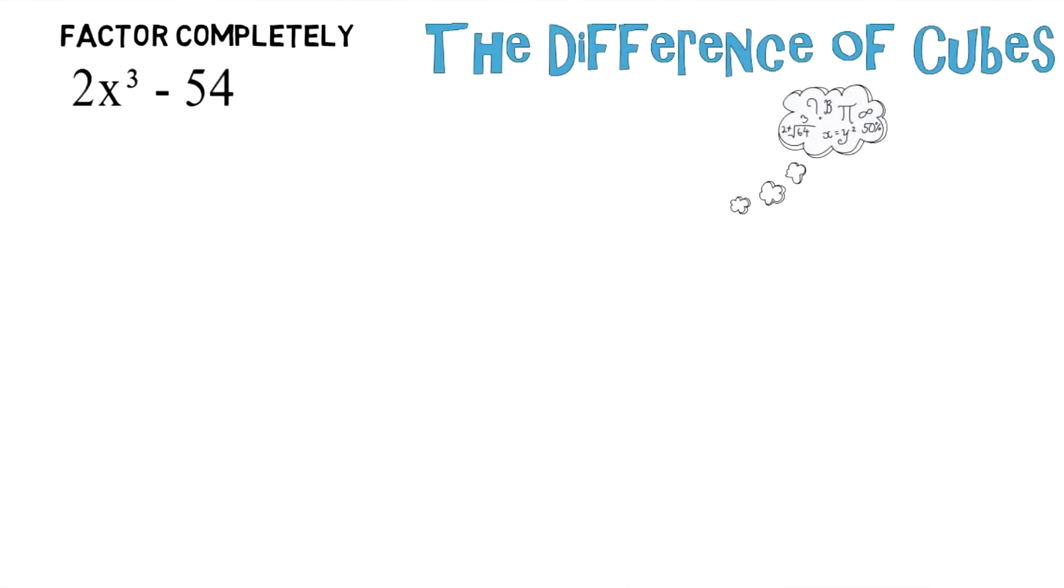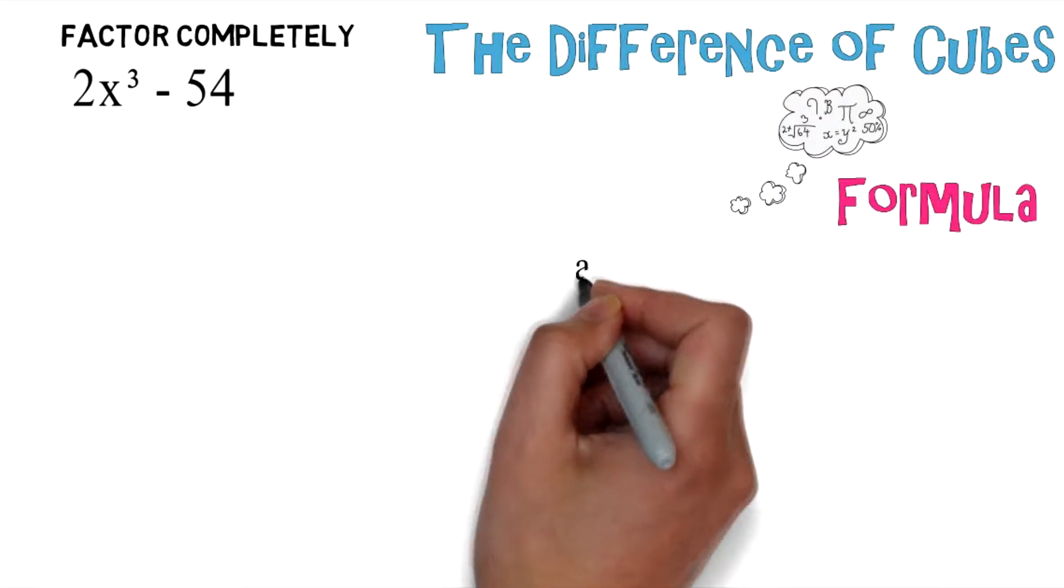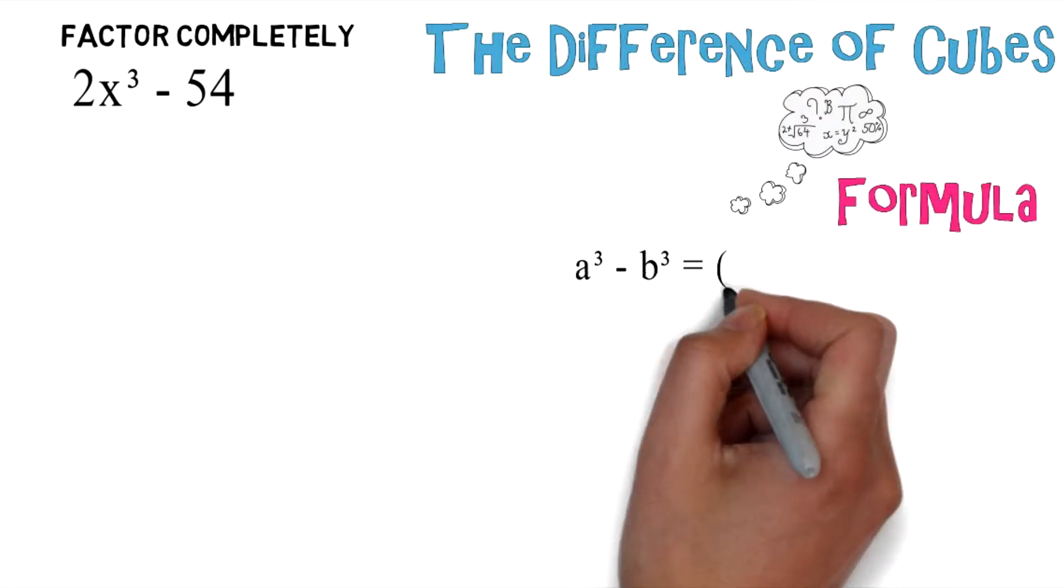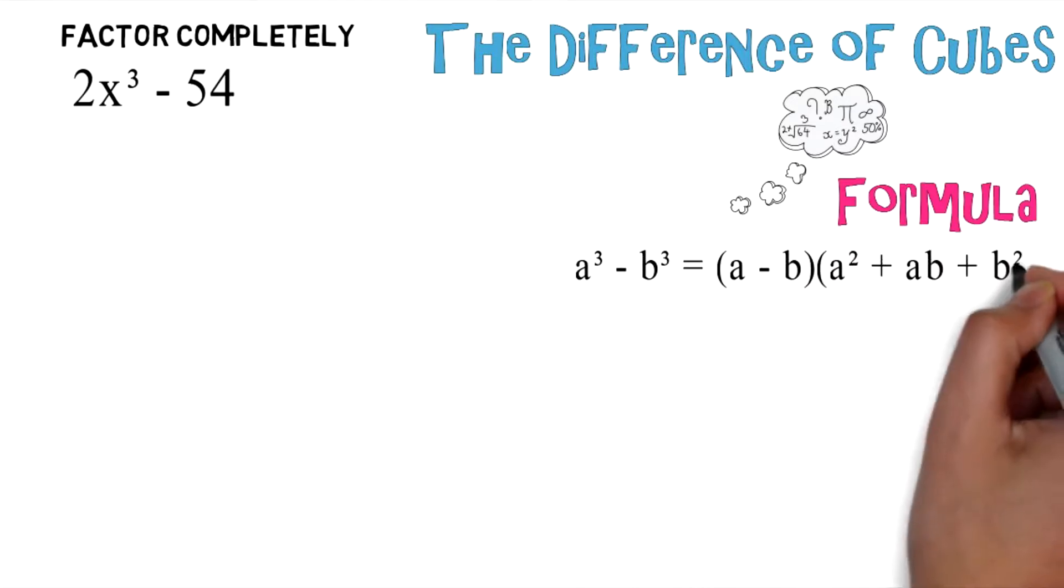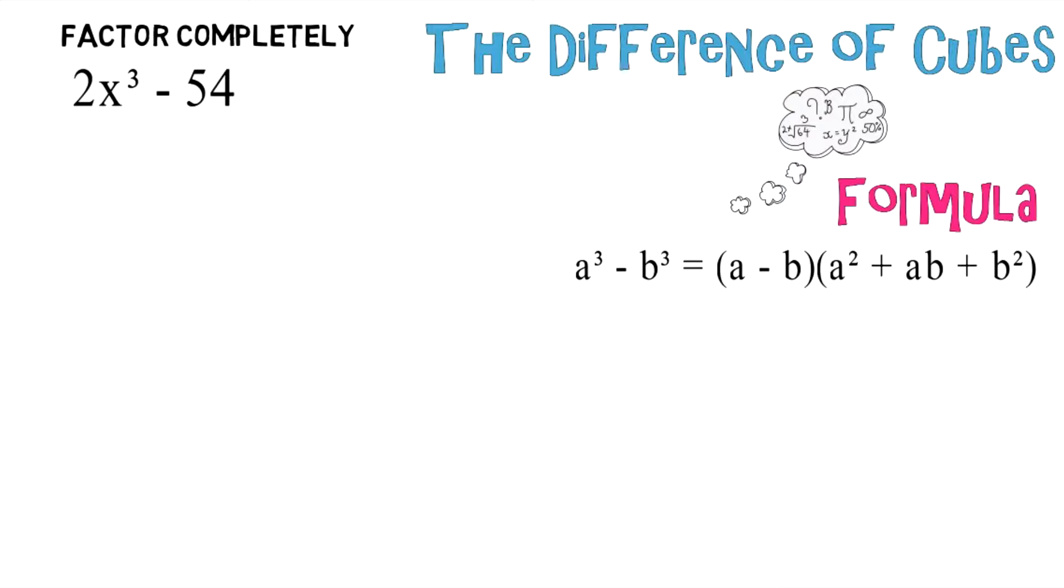One of the first things you should definitely know is the formula: a to the third power minus b to the third power equals a minus b times a squared plus ab plus b squared.